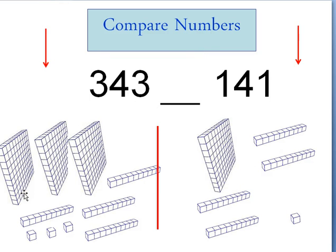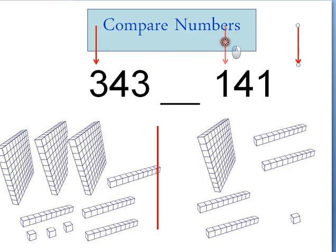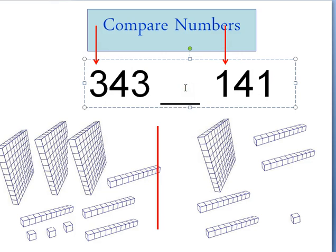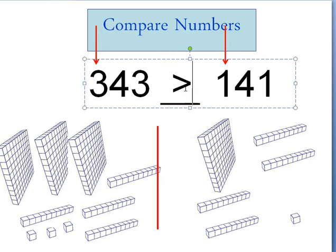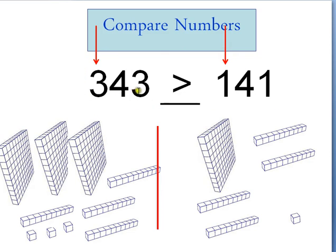Now let's look at 343 and 141. They both have numbers in the ones, tens, and hundreds place. So I'm going to compare the hundreds first because that's the largest place value. This one has three hundreds and this one has one hundred. Three hundred forty-three is greater than one hundred forty-one — those three hundreds are more than all of these combined.